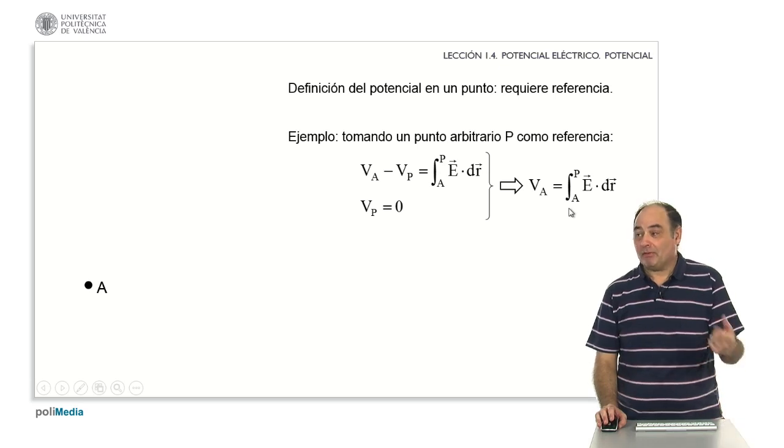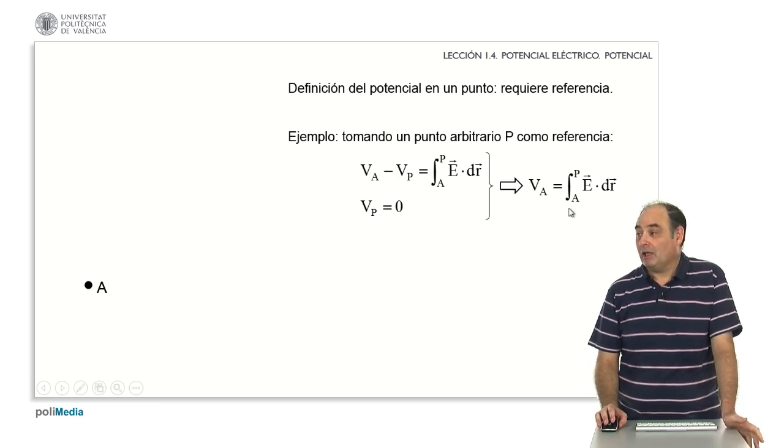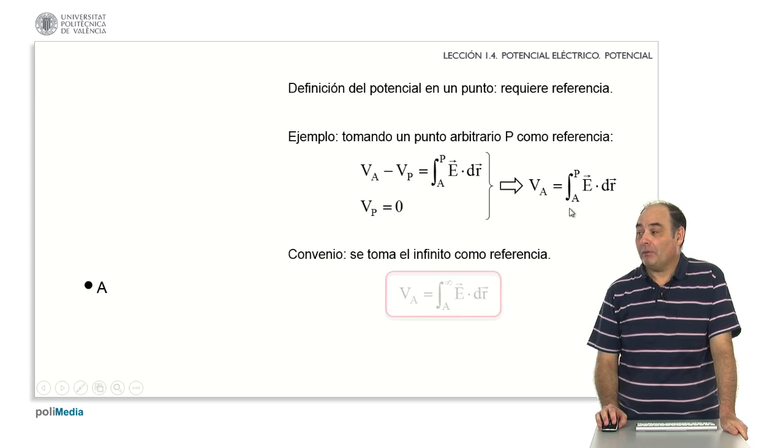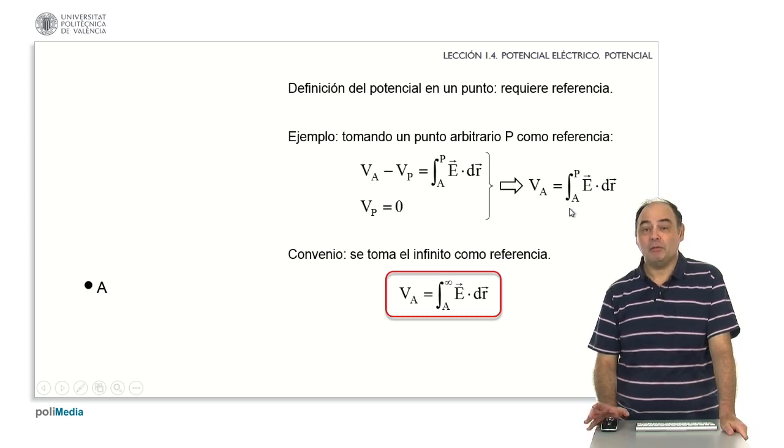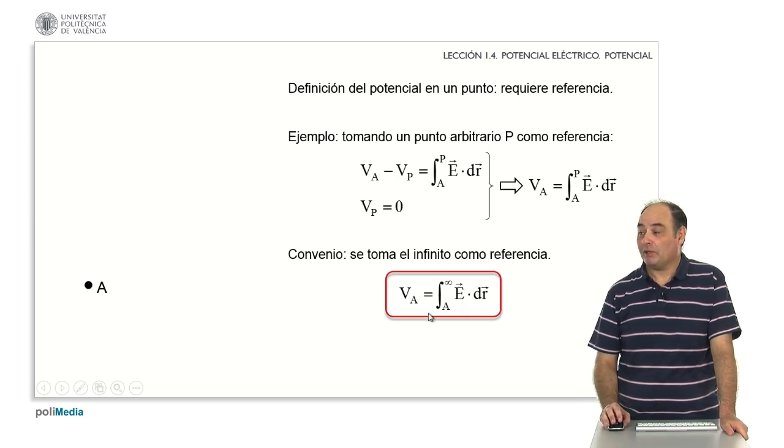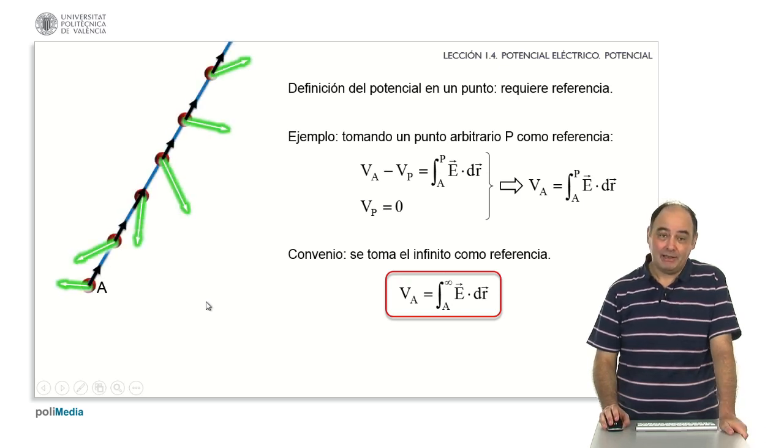This is because you can change the definition of the potential by adding a constant to all the points, and the difference would not change, the absolute values would. Since this is arbitrary, the convention that has been universally adopted is that infinity is taken as a reference. It is considered that it is at infinity where the potential is zero, so that the absolute potential at any point is the integral when we go from that point to infinity of the electric field.